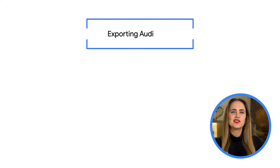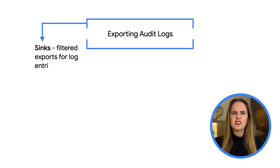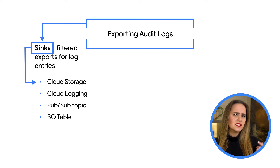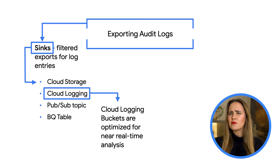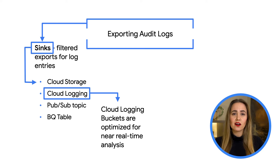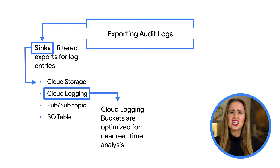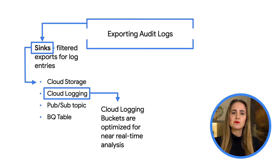We set this up by using Google Cloud Operations Suite's export feature in combination with sinks, which are basically filtered exports for log entries. The supported destinations for sinks can be a Cloud Storage bucket, a PubSub topic, a BigQuery table, or a Cloud Logging bucket. We created a sink in our application project — the one Brad Actor says he compromised — and copied those logs into a Cloud Logging bucket in our logs monitoring project. Unlike logs stored in Cloud Storage, logs stored in Cloud Logging are indexed, optimized, and delivered to let you analyze your logs in close to real time.